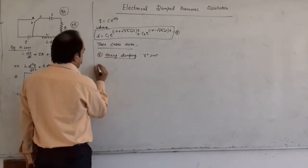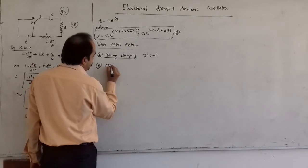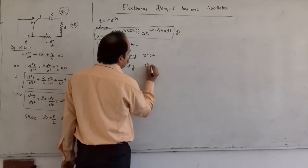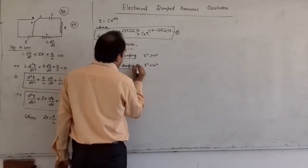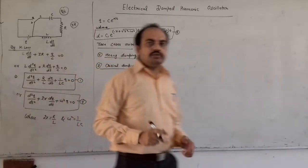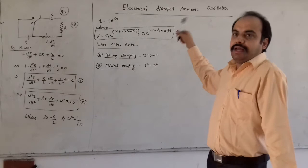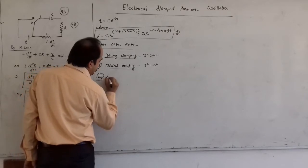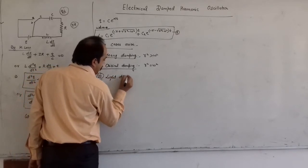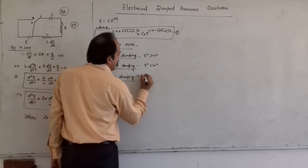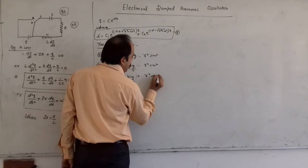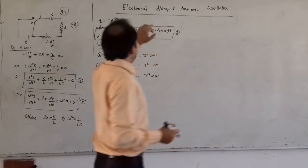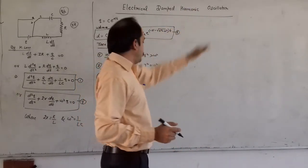The second case is critical damping, where β² = ω². Again, I am not going into detail — for details you can check my previous lecture on the mechanical damped harmonic oscillator. The third case is light damping, where β² < ω², and we get oscillatory solutions. You can consult my previous lecture for the full derivation of this solution.